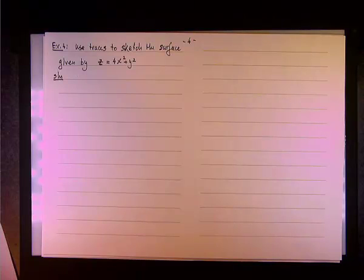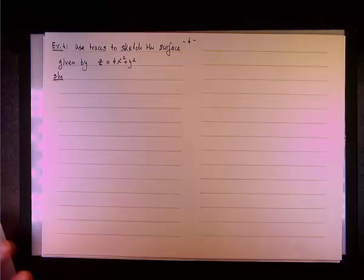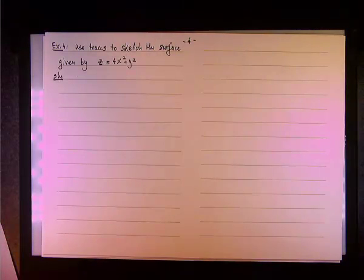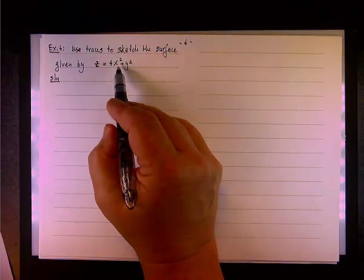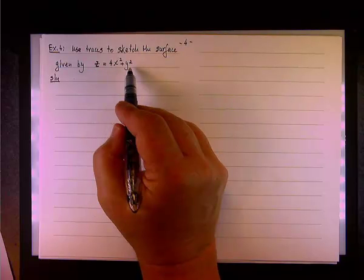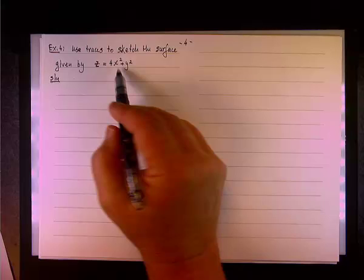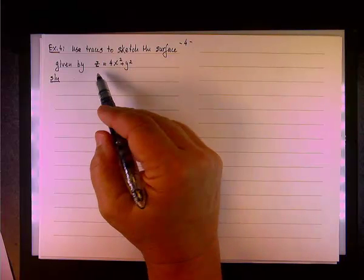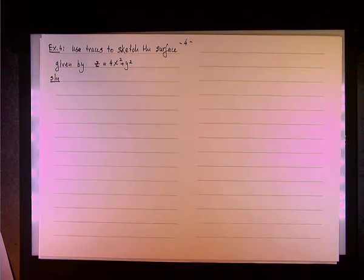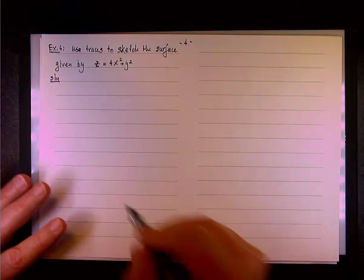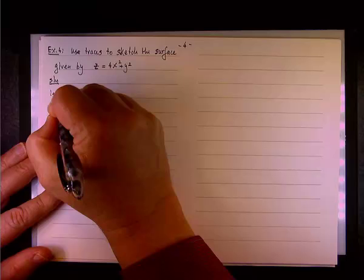We're going to let each variable in turn equal a constant k and see what happens. For instance, if we let x equal zero, we have the parabola z equal y squared. And if we let x equal a constant k, we still have a parabola z equal y squared plus 4k squared. 4k squared is just a number. So what happens, the vertex of the parabola is shifted up. Instead of sitting at the origin, it's still going to be a parabola that opens up, but shifted upward.